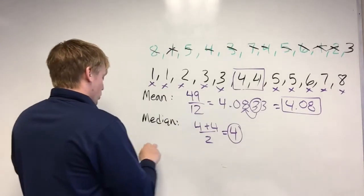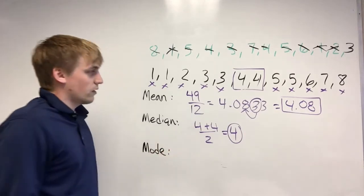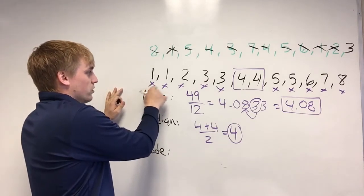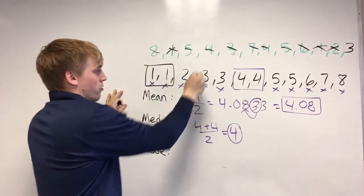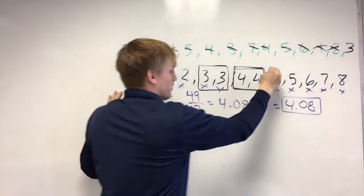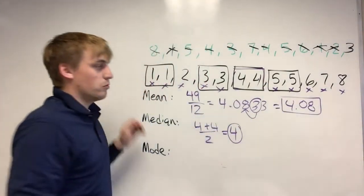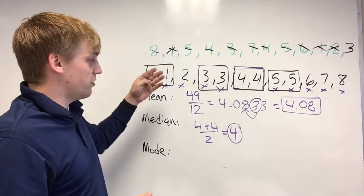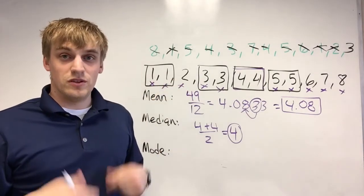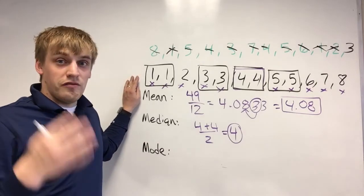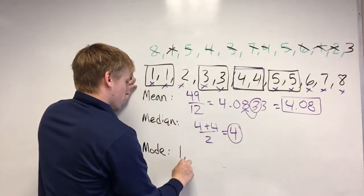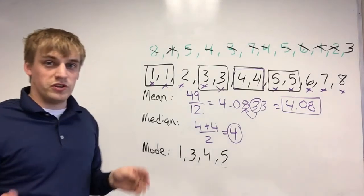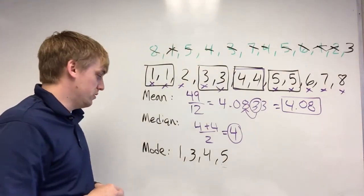The next measure is mode. One shows up twice, three shows up twice, four shows up twice, five shows up twice. Mode is the number that shows up most often. In this case, we have four different numbers that each show up the same number of times — the most often. So we have four different modes: one, three, four, and five.